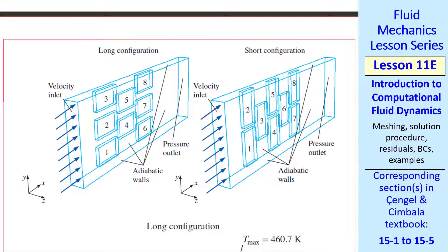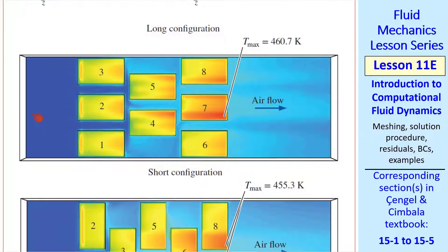Here's how I set up the problem with all the boundary conditions. Velocity inlet, walls, and pressure outlet. Each chip had an internal source of heat or energy supplied.